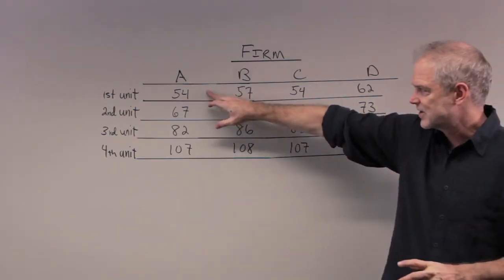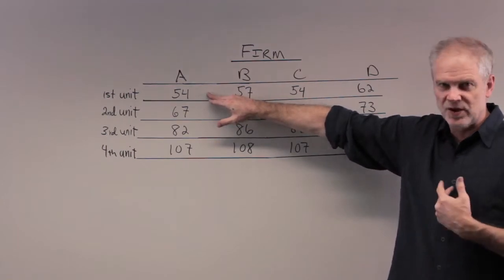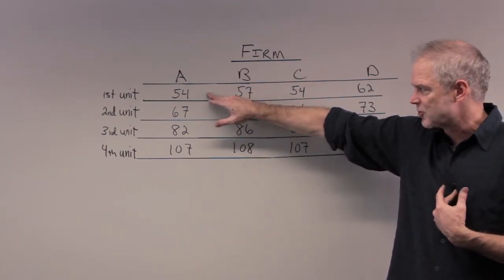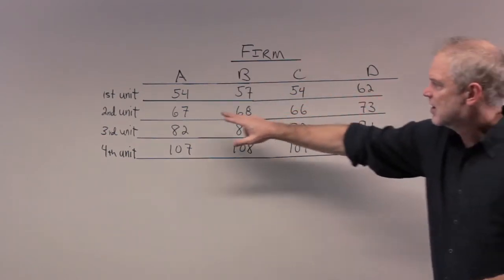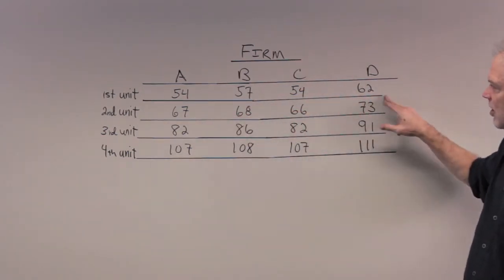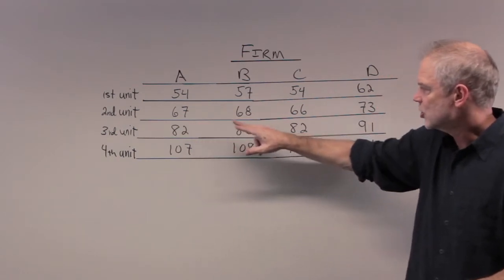So now, A says this is a no-brainer. It's a $30 difference between what I can get rid of and what the government's going to charge me. So they'll get rid of this, B will get rid of this, C will get rid of this, D gets rid of this. Gone, gone, gone, gone, gone, no.